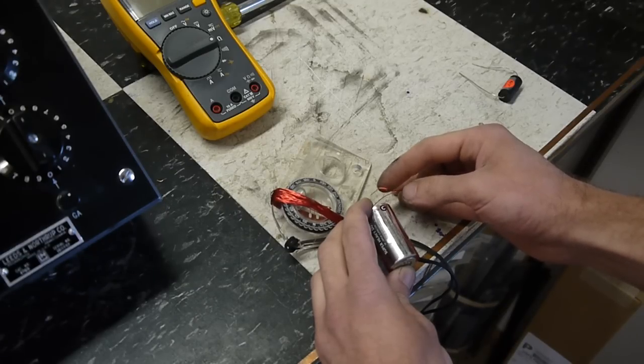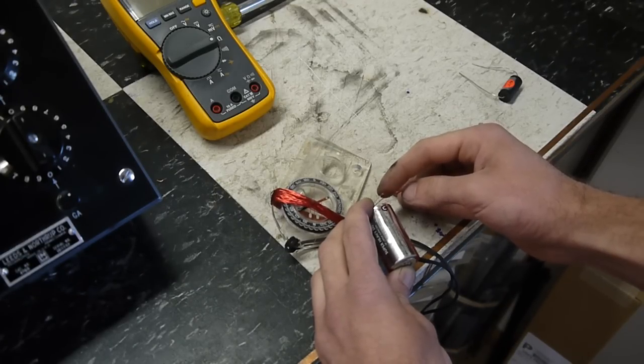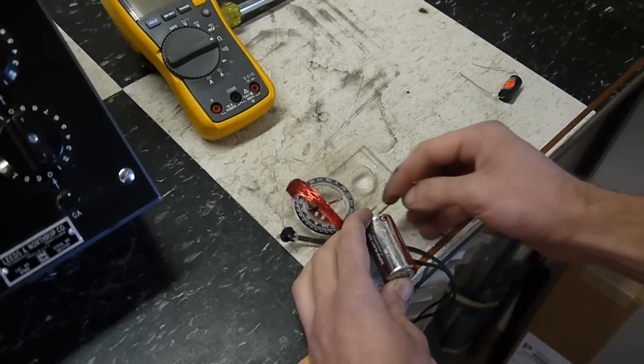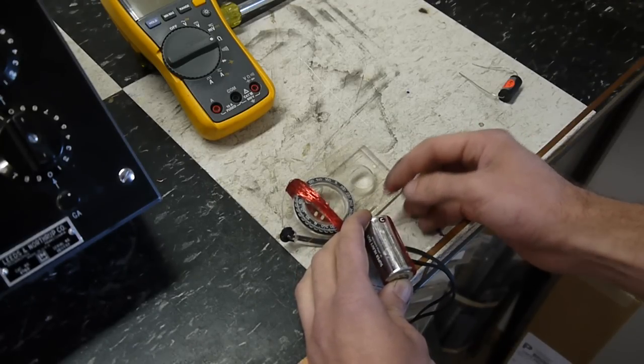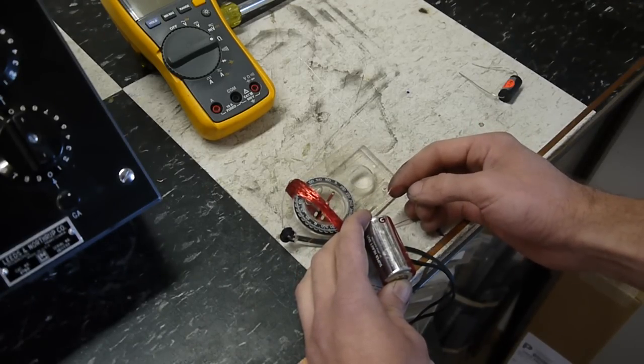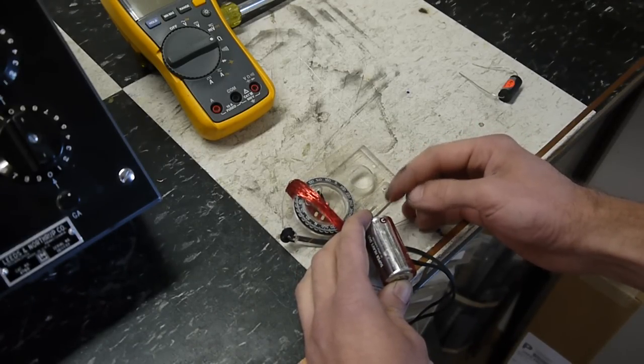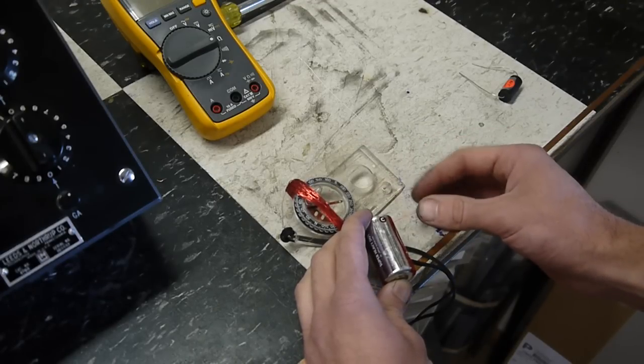And as you can see with this homemade galvanometer, technically this is a tangent galvanometer. Just putting a, touching the battery moves the compass needle very violently.